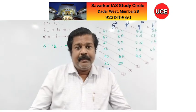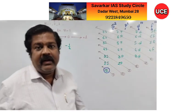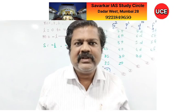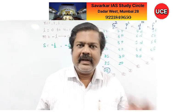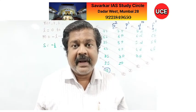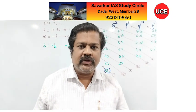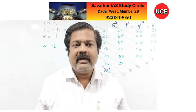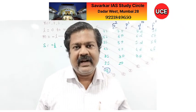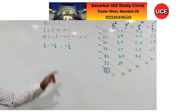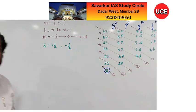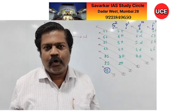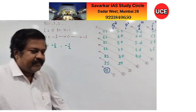The reason spin is expressed as +½ and −½ is that particles are categorized as fermions and bosons. Fermions are denoted by half-integer values (½, 3/2, etc.). Electrons belong to the fermion category, so they are denoted as +½ (clockwise) and −½ (anticlockwise).